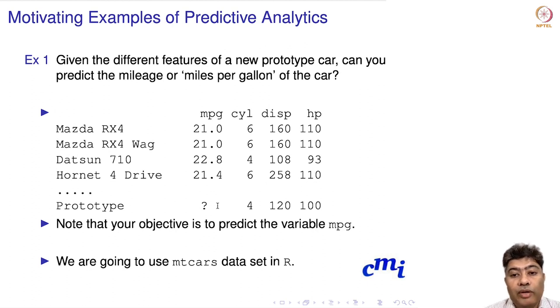Now you have a new prototype car which you've designed: a four-cylinder car with displacement 120 and horsepower 100. What would be the miles per gallon of this new prototype car? Can you predict this value? This is precisely the kind of problem we will be talking about in this entire course.